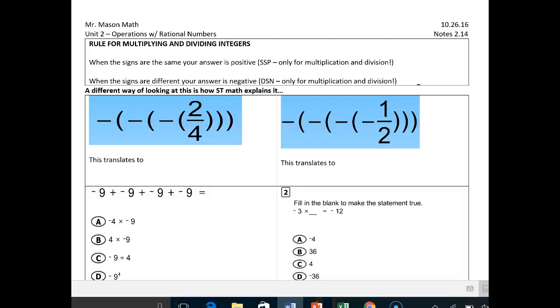Hey there, CJ and math students. Today we're going to walk through the patterns through multiplying and dividing integers. The rule is pretty simple. When you have the same signs, your answer is positive, SSP.